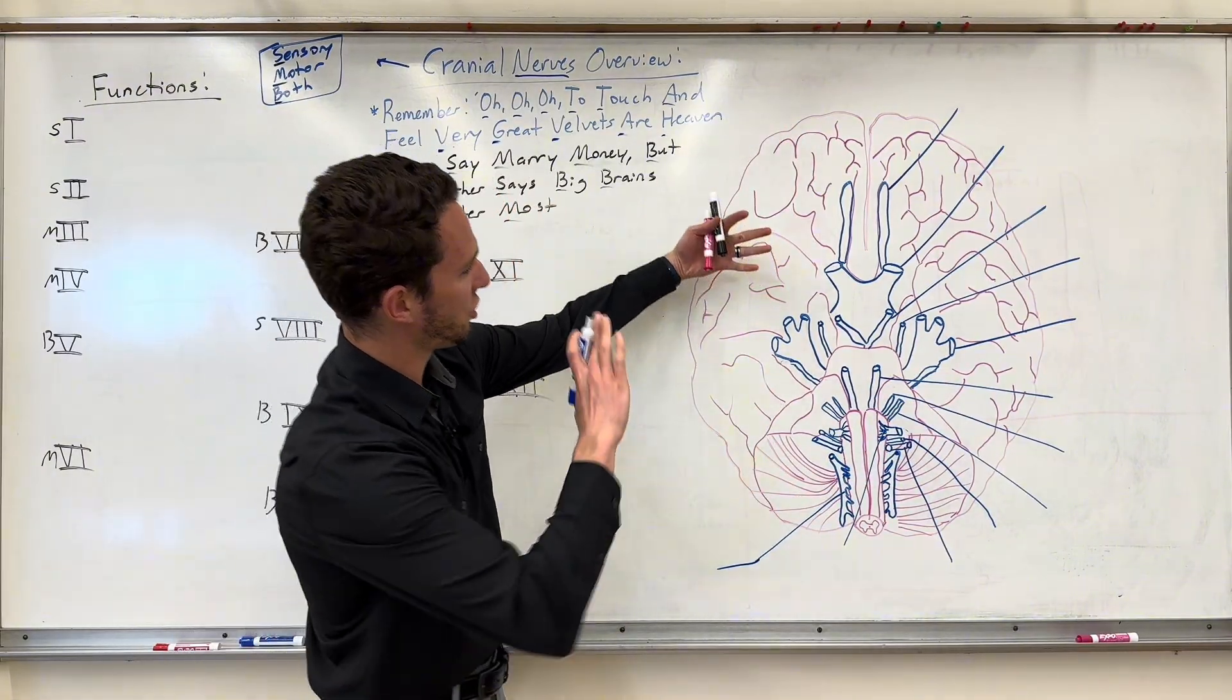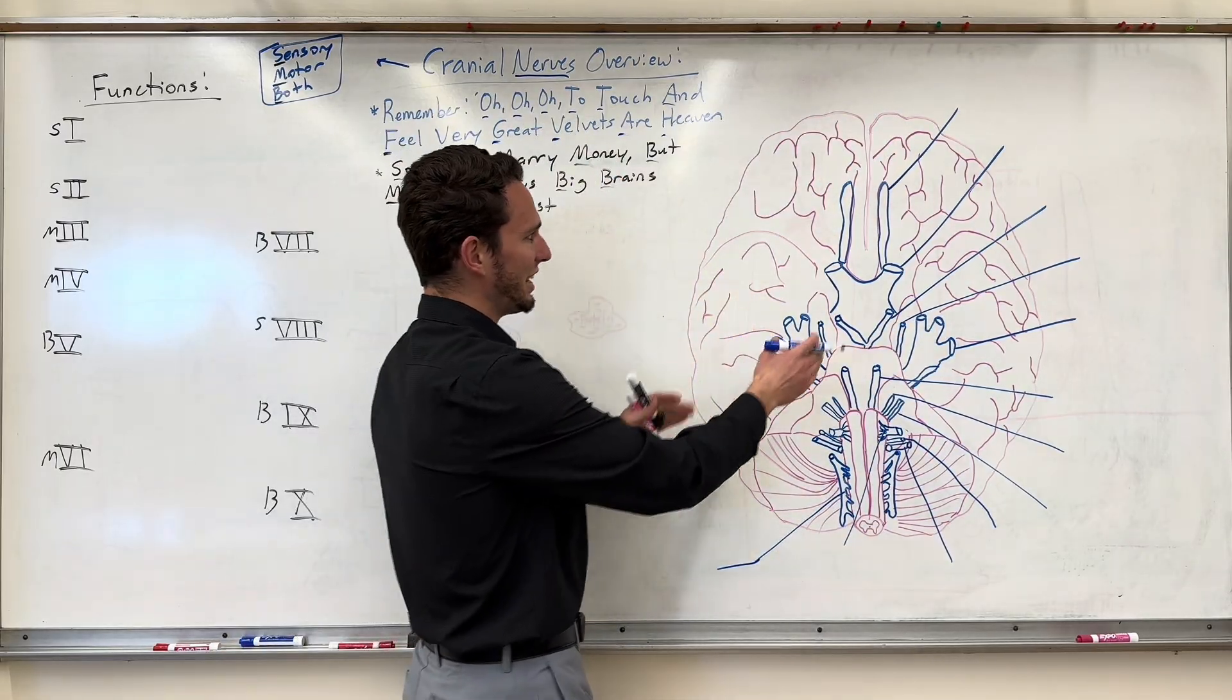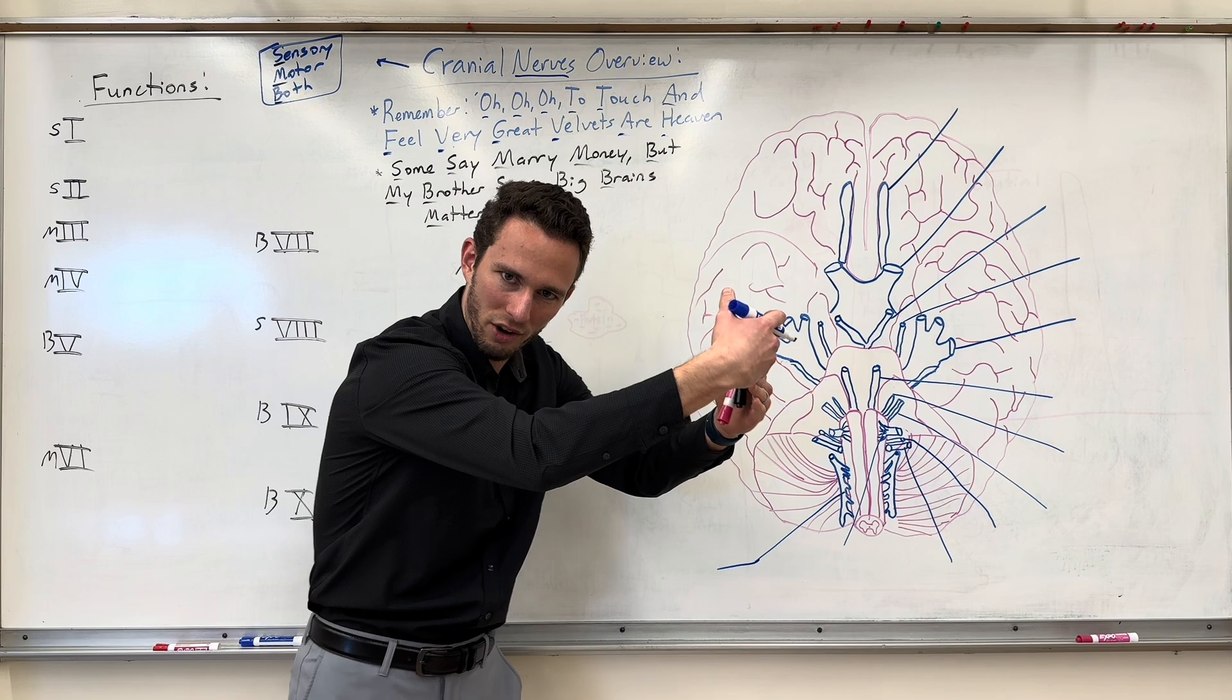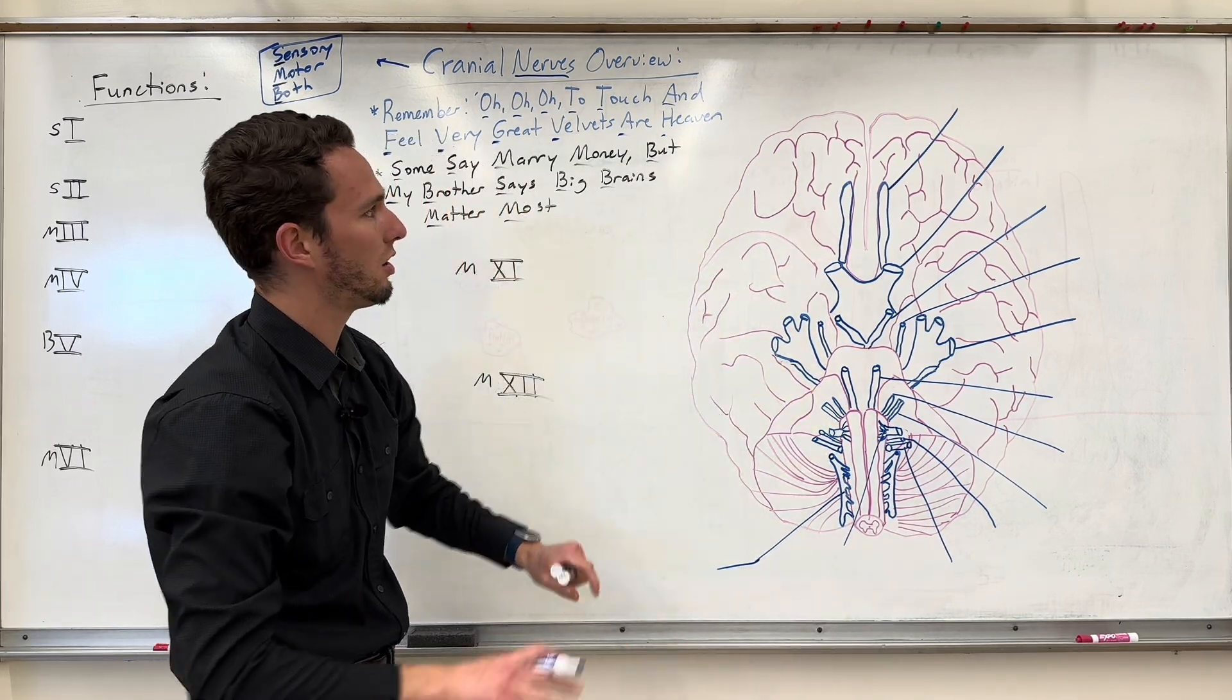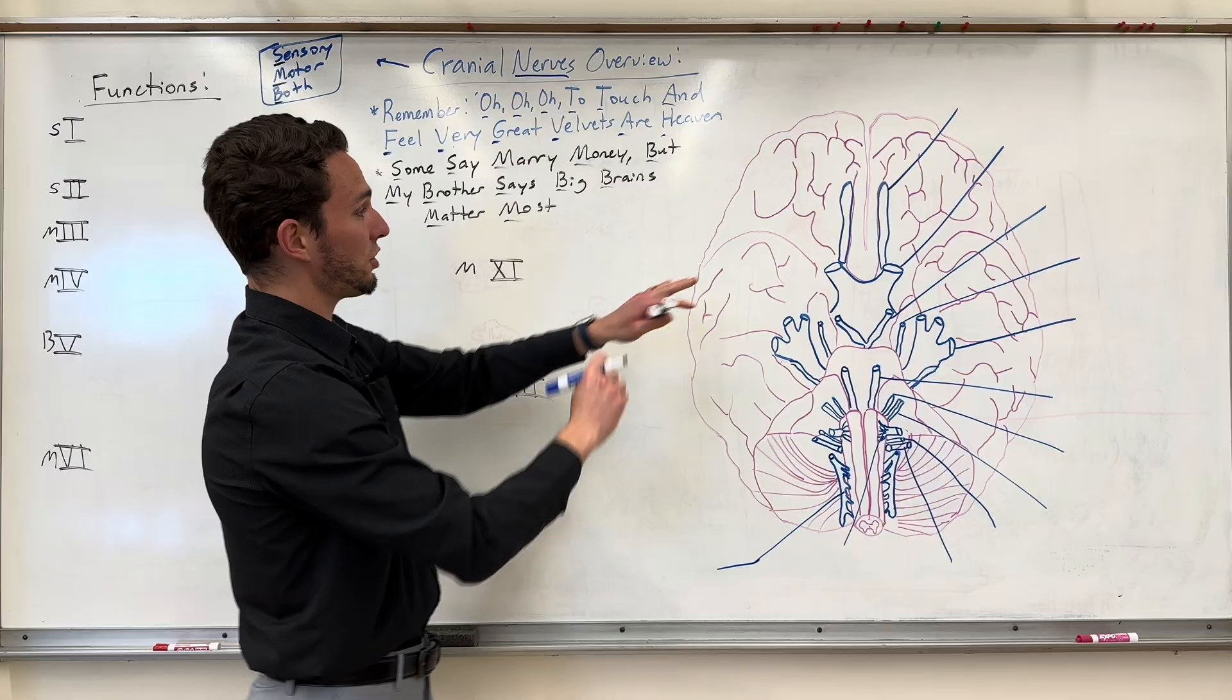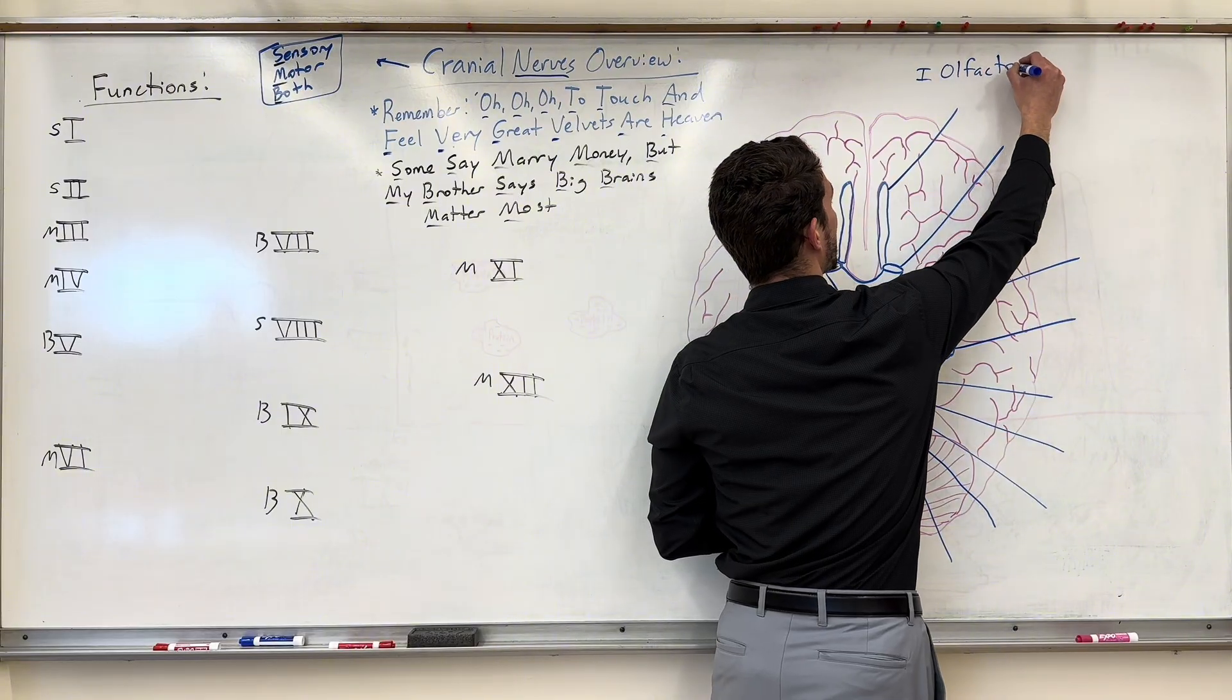So how did we name the cranial nerves? Well, here we get the brain on an inferior section. We're looking up at the brain. And here's the back and the cerebrum, spinal cord's right there. And as you can see, we're kind of moving from anterior to posterior. In fact, that's how the cranial nerves were actually named, was basically where they appeared from front to back. So we're going to move through these one through twelve and name them.